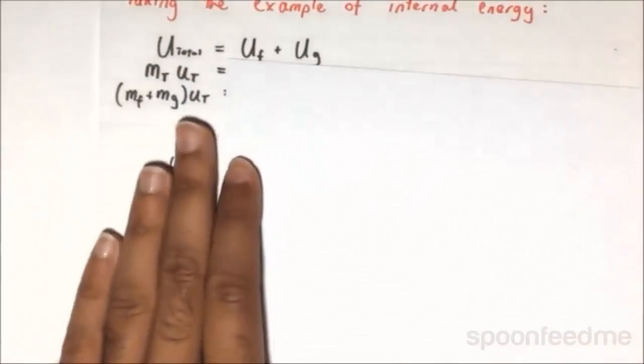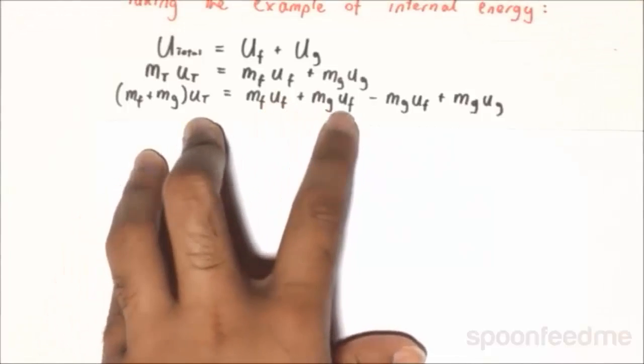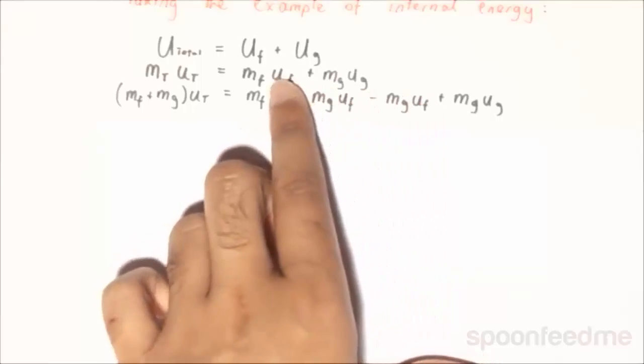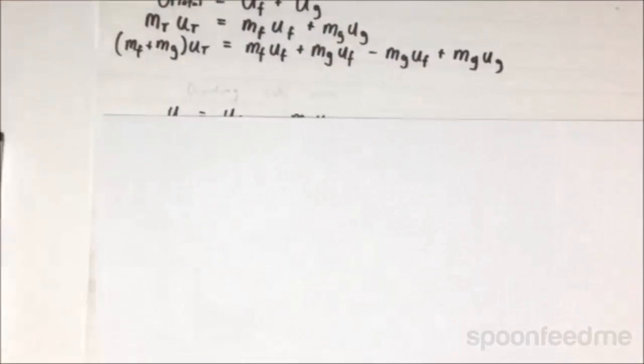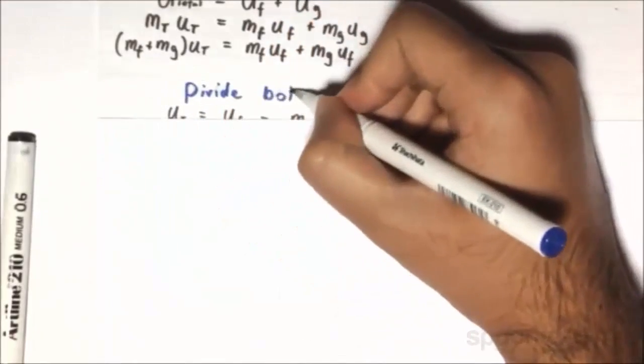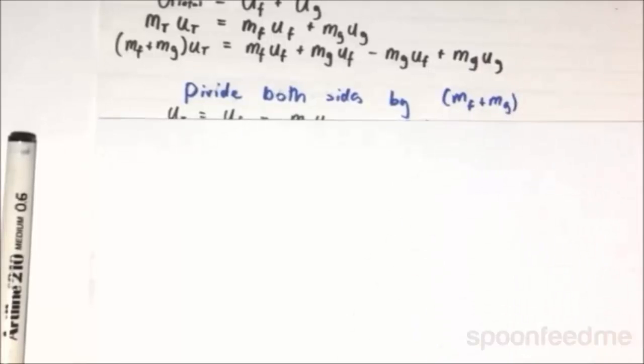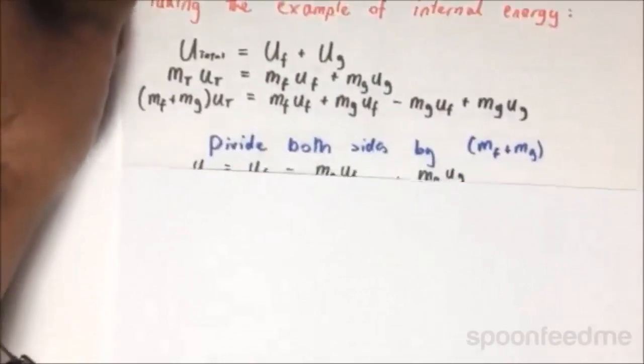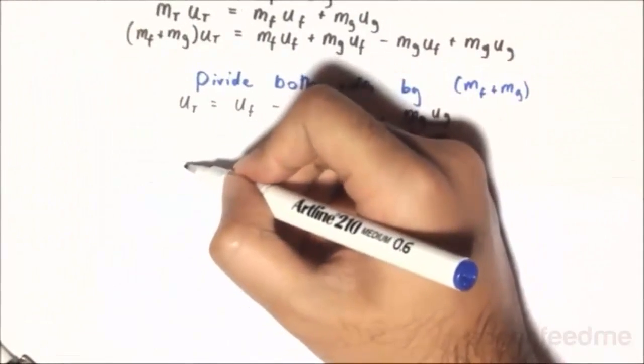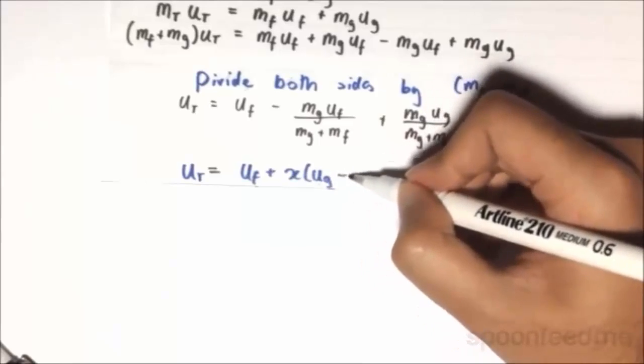Now, we already know that mt is equal to mf plus mg. And over here, we do a neat little trick, where we add an mg UF and we subtract an mg UF. So in essence, it doesn't really change anything in this equation here. But you'll see why it becomes handy a little bit later. Now, if we divide both sides by mf plus mg, then we get the following. Now, if you recall, mg on mg plus mf is just equal to x. So we can therefore simplify the total u to be UF plus x UG minus UF.